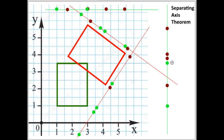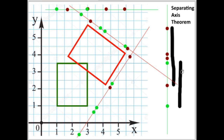If I connect the two projections with the same color that are the furthest away from each other along one axis, then the two line segments I get need to overlap along every axis for the collision detection to return true.